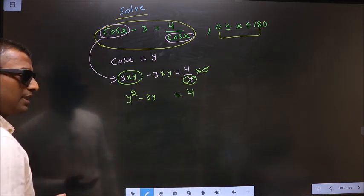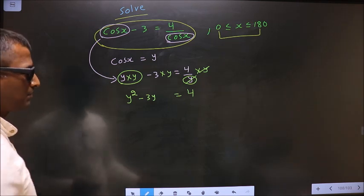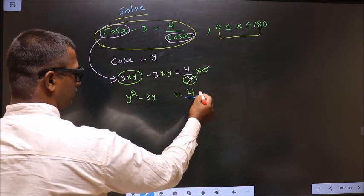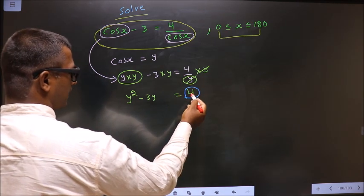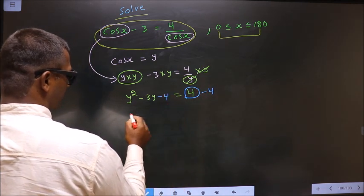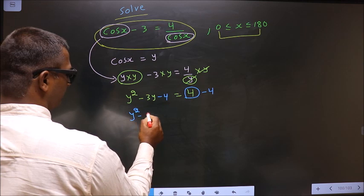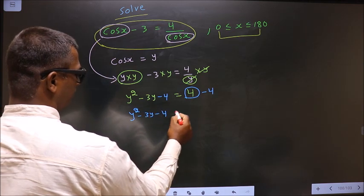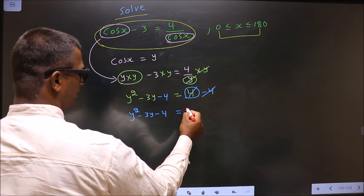Now you bring all the terms to one side. What I mean is this 4 should not be present on this side. So to remove the 4, you subtract 4. So now you get y square minus 3y minus 4 equal to 0.